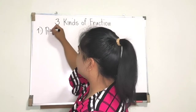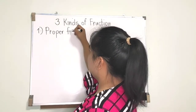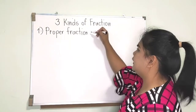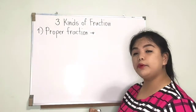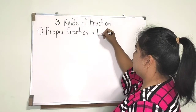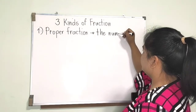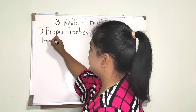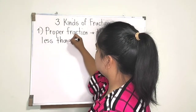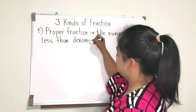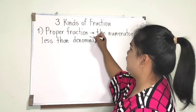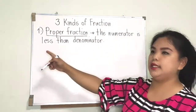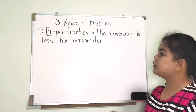The first one is what we call a proper fraction. When we say proper fraction, it means the numerator is less than the denominator. As simple as that. So again: proper fraction — the numerator is less than the denominator.